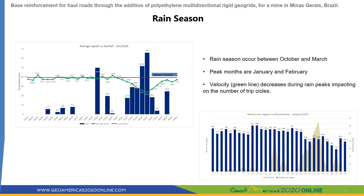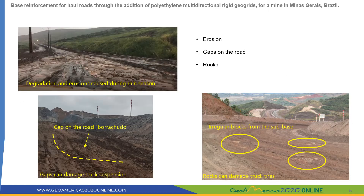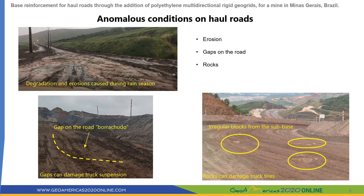This decrease impacts directly on the number of trip cycles, as we can see on graph number 2. Here I want to show some anomalous conditions that commonly occur on the haul roads. The first picture illustrates degradation and erosions caused by intensive rain. The picture below shows a difference in surface level which we call 'borrachudo' — this type of surface can damage truck suspension. On the right picture we have irregular blocks from the sub-base, which can damage truck tires.